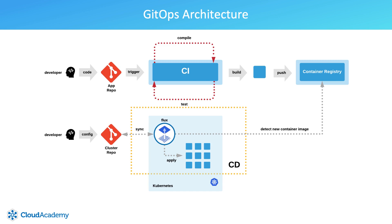GitOps promotes the role of Git to the front and center of the build and deployment workflow. The entire known cluster state is declared and stored in Git, so that Git becomes the so-called system of truth. Nothing enters or is deployed into the Kubernetes cluster without first being declared. All of the declarative workloads are pushed into a Git repository, and then a pull request is typically raised.